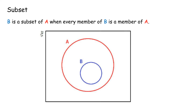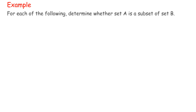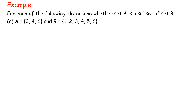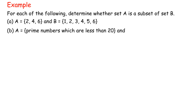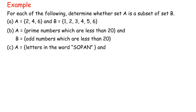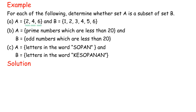Subset: B is a subset of A when every member of B is a member of A. Example: for each of the following, determine whether Set A is a subset of Set B. A: A = {2, 4, 6} and B = {1, 2, 3, 4, 5, 6}. Solution A: every element of A is found in B, so A is a subset of B.